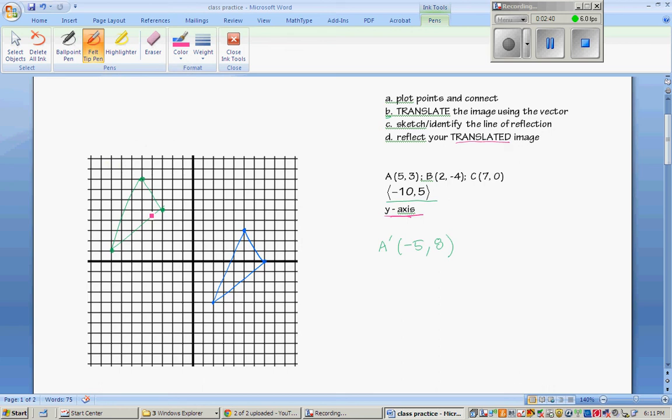We're going to reflect the translated image, the green one. Otherwise, why did we draw it? So we're going to use this now. I'm going to count 3 over and 3 over on this side. I'm going to count 5 over and 5 over on this side.